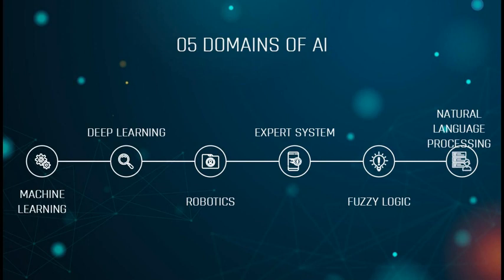Moving on to the next topic: the different domains of AI. We have machine learning, deep learning, expert systems, fuzzy logic, and natural language processing — these are the different domains and branches that AI uses to solve problems. Machine learning is designed to get machines to interpret and analyze data in order to solve real-world problems. Deep learning is a process of implementing neural networks on high-dimensional data to gain insights and form solutions. Natural language processing refers to the science of drawing insights from natural human language in order to communicate with machines and global systems. Examples of natural language processing include Twitter and Amazon.